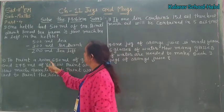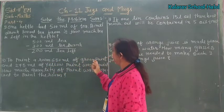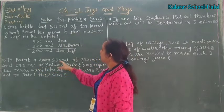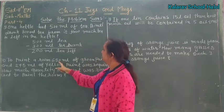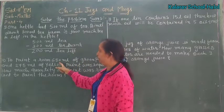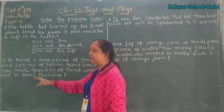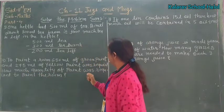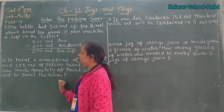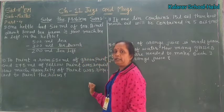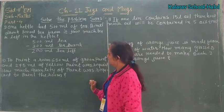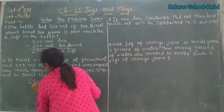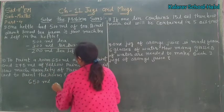To paint a room, 650 ml of green paint and 275 ml of yellow paint were used. Yaha pere, room paint karna ke liye, green color 650 ml and yellow color 275 ml was required.